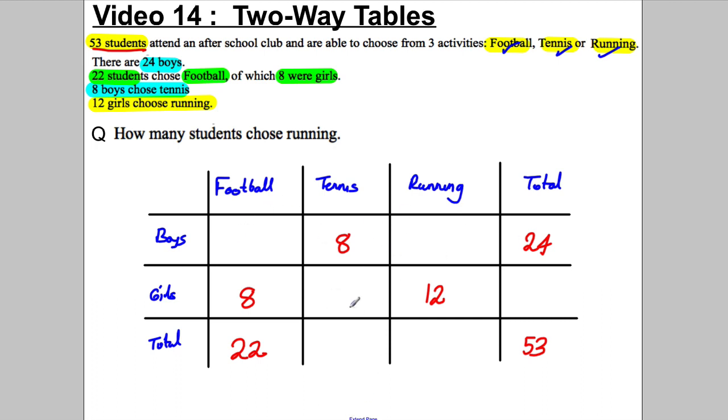Now with this information we can find all the blanks and how we do it is simple. We look at a row or column that's full up apart from one thing missing and use that to find the missing value. Because we have 53 in total and 24 boys, we can work out the girls. The girls must be 53 subtract 24, which tells us we must have 29 girls. I'm going to write that in a different color and put a sign around it to show that's one we worked out.